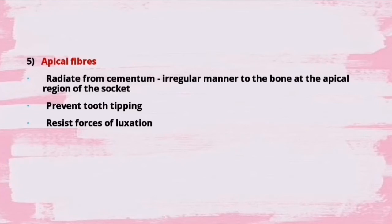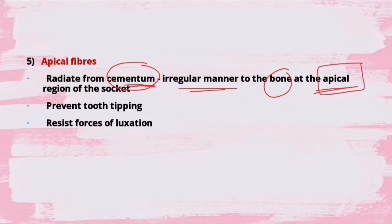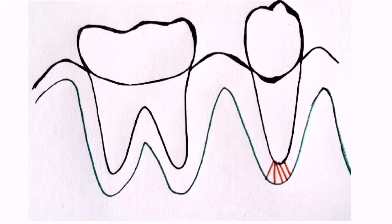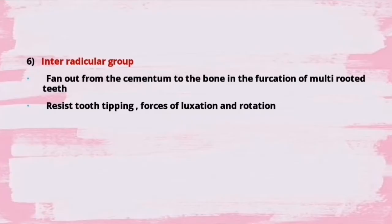The fifth group is the apical fibers. They radiate from the cementum in an irregular manner to the bone at the apical region of the socket - that is why they are called the apical group. They prevent tooth tipping and resist forces of luxation. They are positioned apically, extending from the cementum to the alveolar bone.